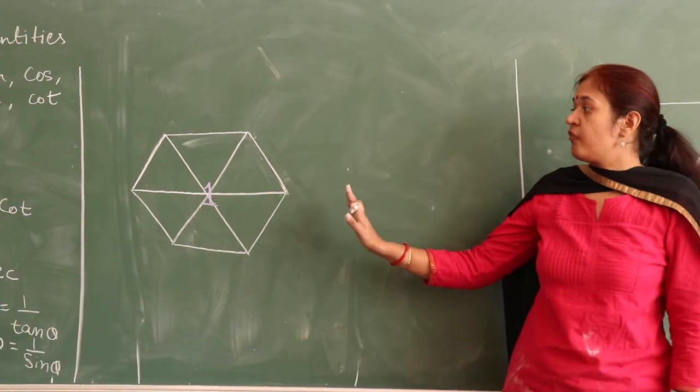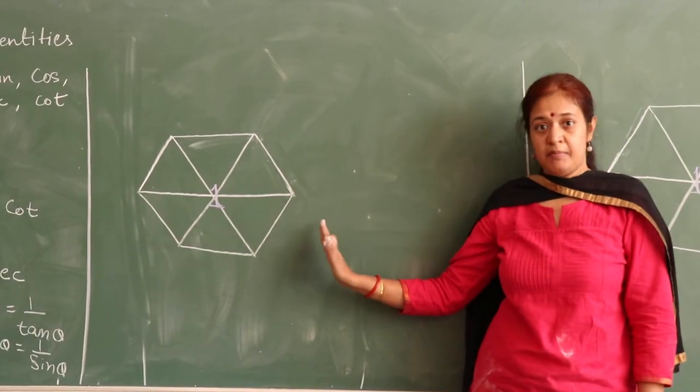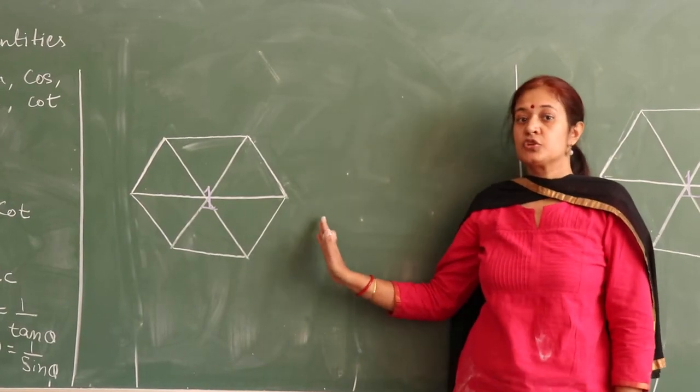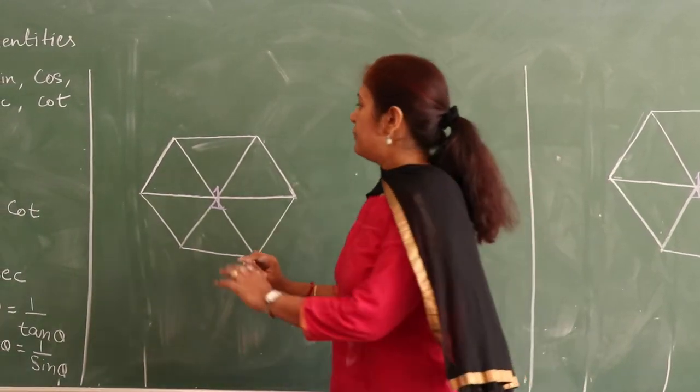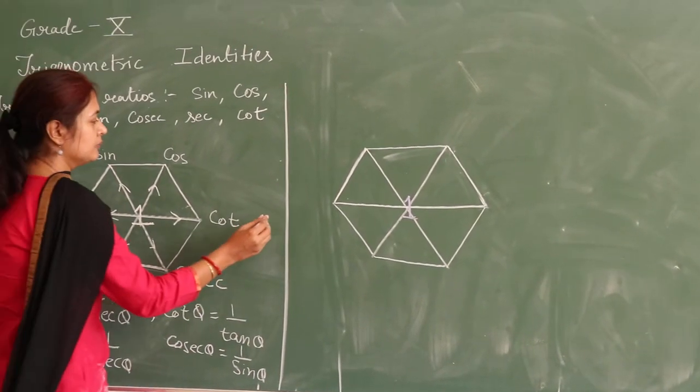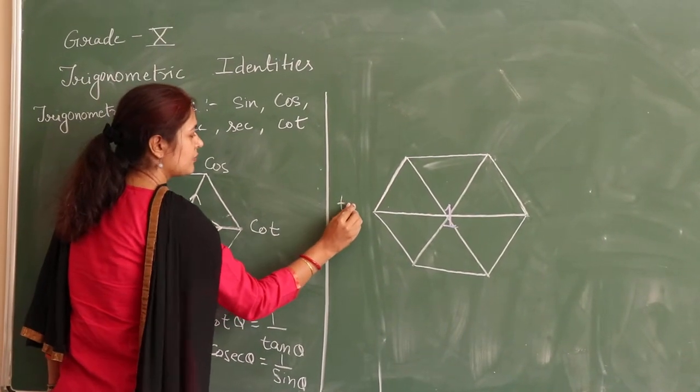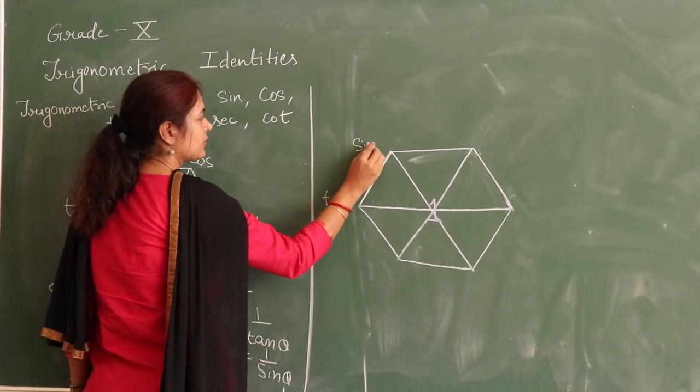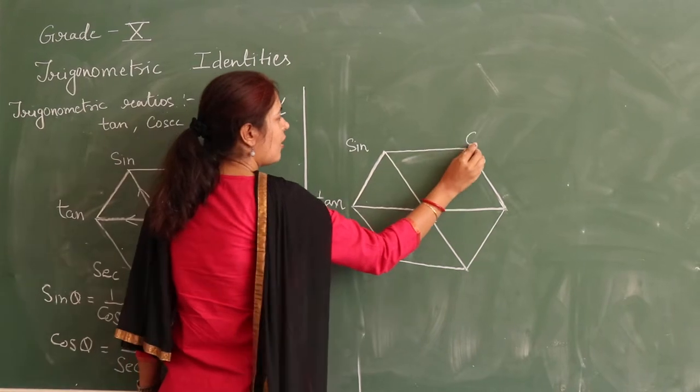Here you can see. Once again I will make the same regular hexagon and we will call this hexagon the super hexagon. Now I place the trigonometric ratios here. We have tan here, sin on this vertex, cos,